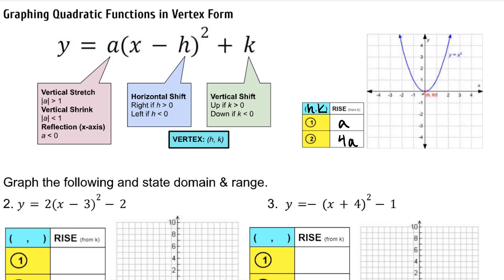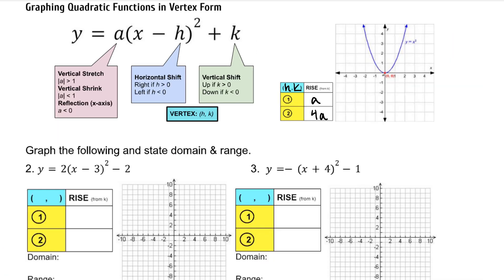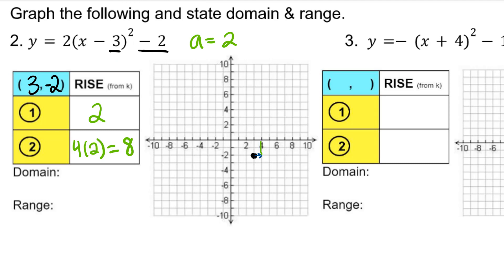Let's practice using the pattern of a and 4a to graph these. First, determine the vertex — that would be (3, -2) — and plot that point. Now determine the rise by identifying a, which is 2. Our first rise is 2, and our second is 4 times 2, which is 8. One unit to the right, rise 2 units. Parabolas always have symmetry about the vertex, so one unit to the left, rise 2 units as well. Two units to the right, rise 8 units. Two units to the left, rise 8 units.